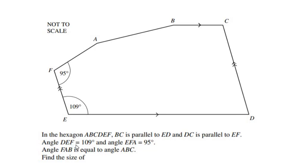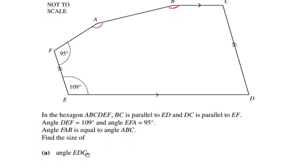Angle DEF is 109 degrees, angle EFA is 95 degrees, and angle FAB is equal to angle ABC — so these two angles are the same. Find the size of angle EDC.